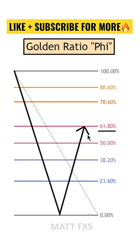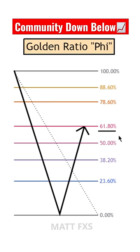And for some technical traders, the 61.8 level is the most popular, as it represents the golden mean ratio in Fibonacci.